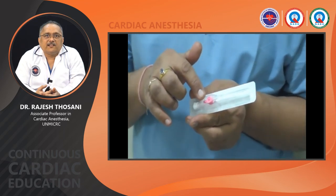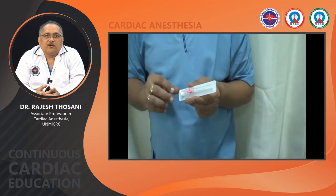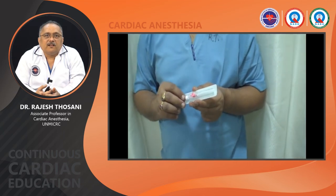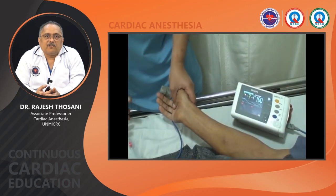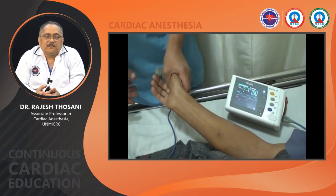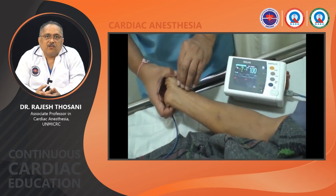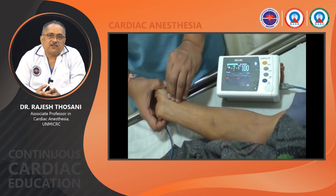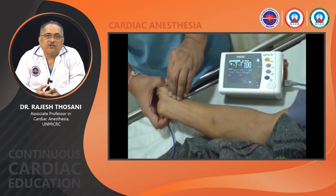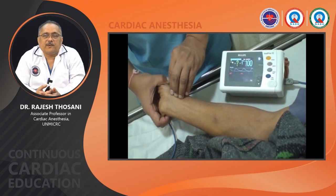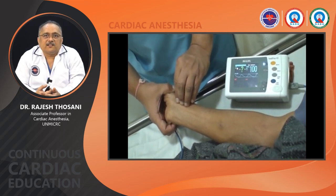A 20-gauge cannula with a port is available for IV sites; without a port is preferable for arterial cannulation, because a port risks accidental drug injection by staff postoperatively. If a cannula with a port is used for arterial access, the port must be capped securely to prevent accidental insertion.